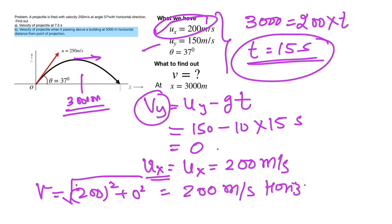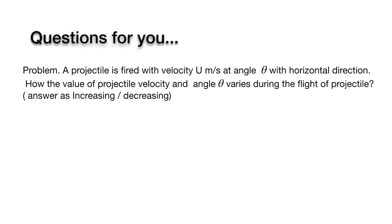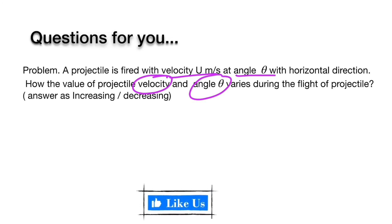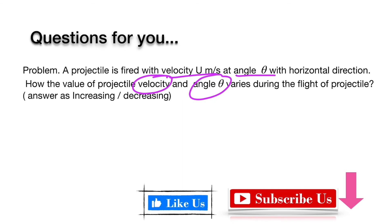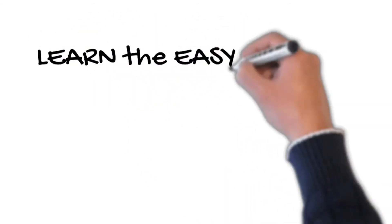Now here is a question for you: a projectile is fired with velocity u at angle theta with horizontal direction — how do the values of projectile velocity and angle theta vary during the flight? You can give your answers as increasing or decreasing. That's all for today's session. I hope you enjoyed it. Please click the like button and subscribe for similar videos. Thank you for watching, see you next time!